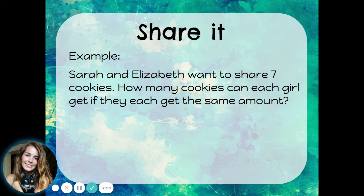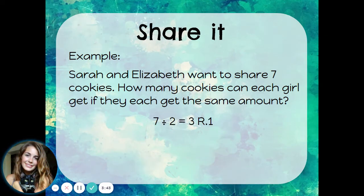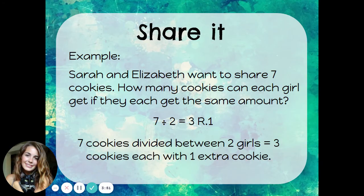Let's look at an example of a problem where you would want to share the remainder. Sarah and Elizabeth want to share seven cookies. How many cookies can each girl get if they each get the same amount? Well, this problem is seven divided by two. We're dividing seven cookies up between the two girls, Sarah and Elizabeth, and that's three remainder one. So what that means is if the two girls share seven cookies, they can each get three cookies, and there's going to be one extra cookie left over.